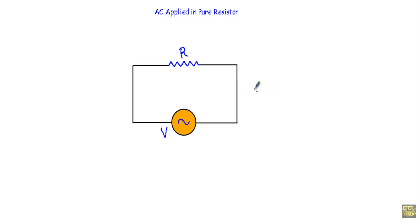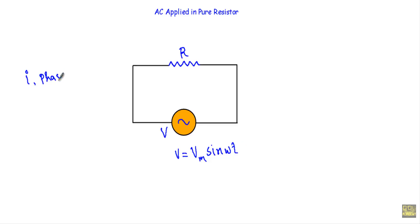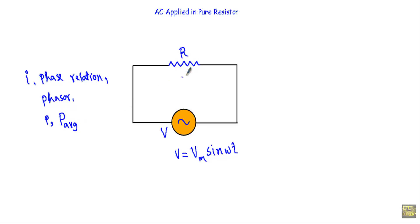In this video, I will show you a circuit which will have a pure resistor R in series with an alternating voltage V. The alternating voltage applied in the circuit will be V equal to Vm sin omega t. I will show you the current equation, the phase relationship between the alternating voltage and alternating current, how to draw the phasor diagram, the equation of instantaneous power small p, and the average power absorbed by the resistor.